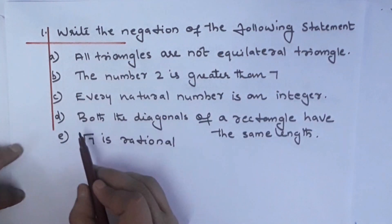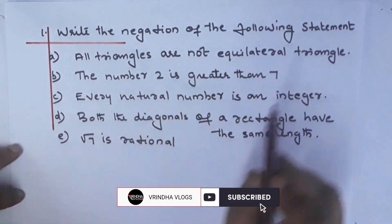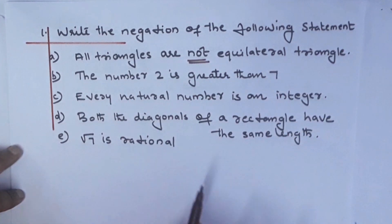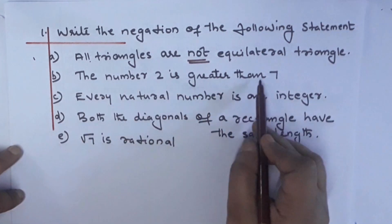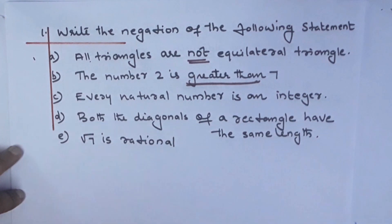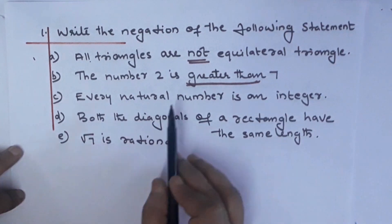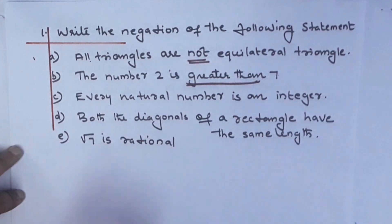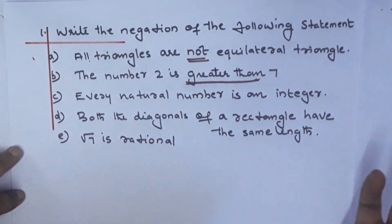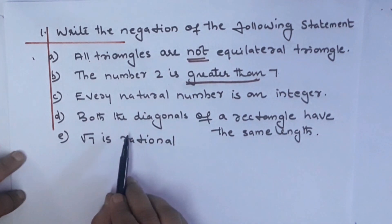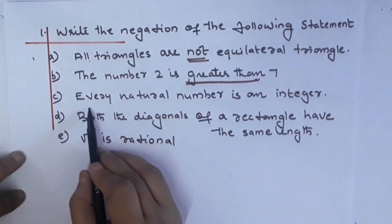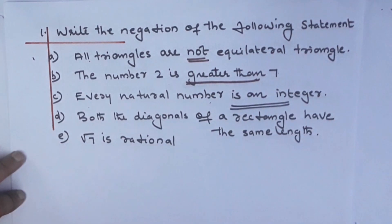Now the first question: Write the negation of the following statement. 'All triangles are not equilateral triangles.' Then we say: 'All triangles are equilateral triangles.' Next question: 'The number 2 is greater than 7.' Negation: 'The number 2 is less than 7.' Next: 'Every natural number is an integer.' Negation: 'Every natural number is not an integer.'